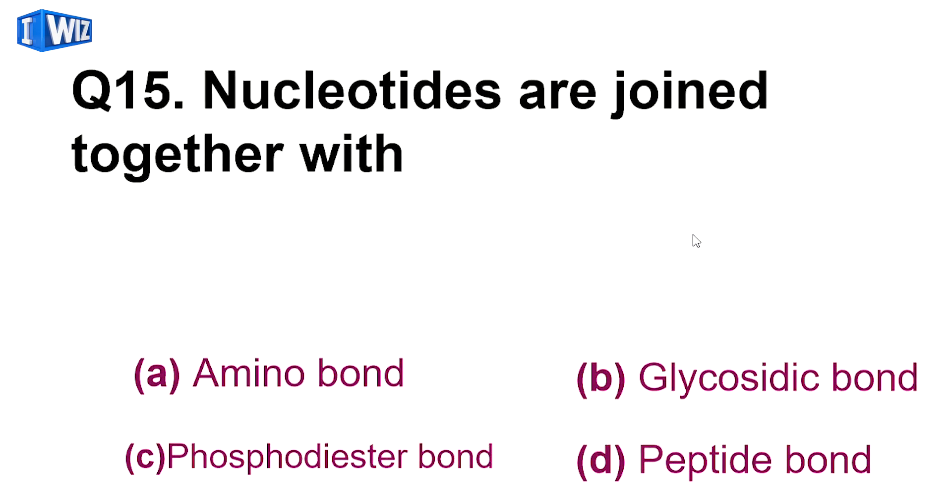Then is, nucleotide are joined together by - so sugar, phosphate, aur base, joh hai, woh dousre sugar, base, aur phosphate groups ke sath jab combine hoote hai, toh inke peech mein jo bond bantai hai, that is called phosphodiester bond. So C is the correct answer.